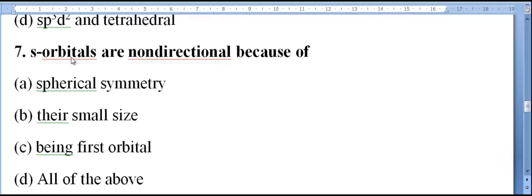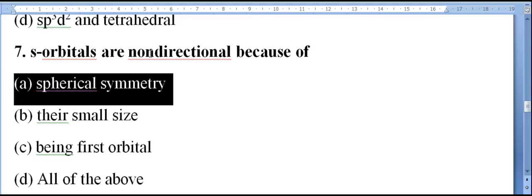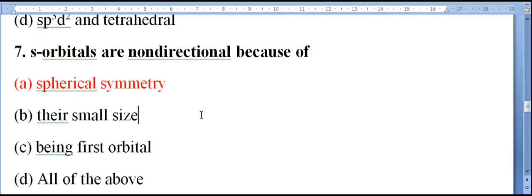S-orbitals are non-directional because of what? First option: spherical symmetry. This is the correct answer, dear students. It is spherical symmetry. S-orbitals are non-directional because it is spherically symmetric.